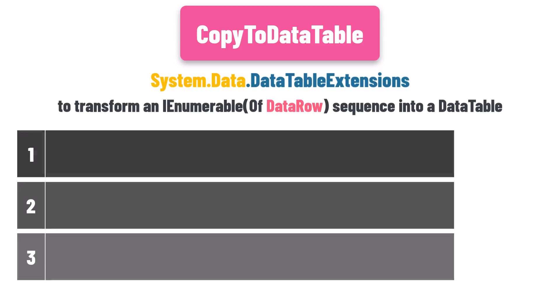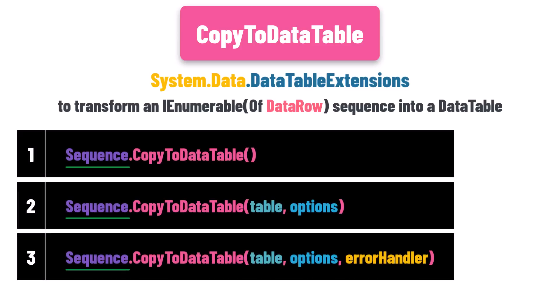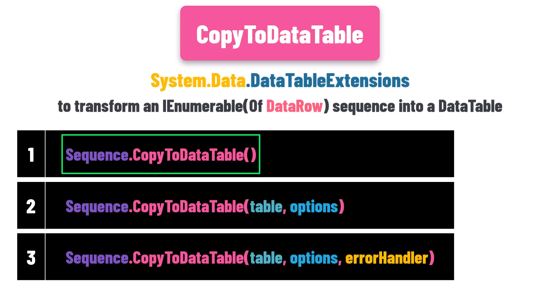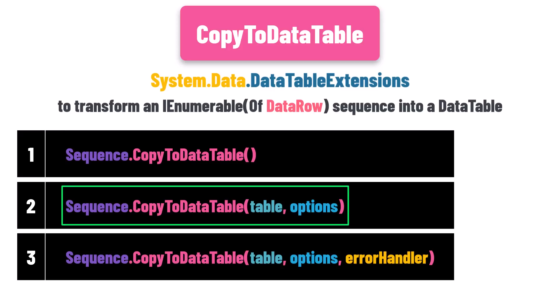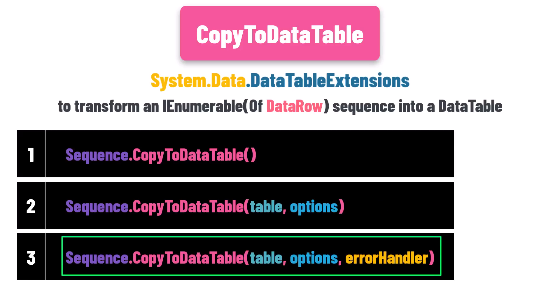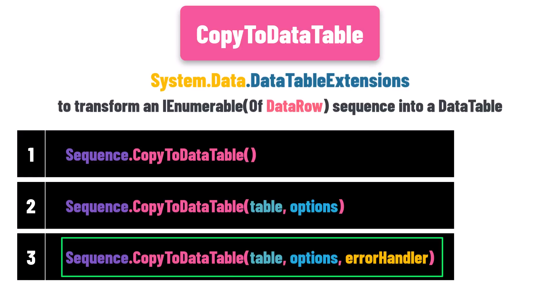This method comes in three overloads, and all these overloads start with an IEnumerable of DataRow sequence. The first overload is straightforward — you call the method without any additional parameters. The second overload includes two parameters: the first is the DataTable where you want to store your data, and the second is the load option, which determines how the data is copied. The third overload adds a third parameter for handling errors.